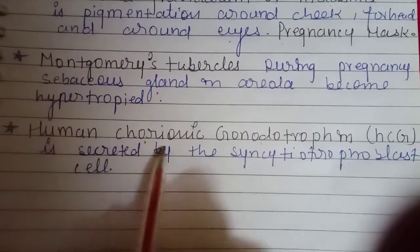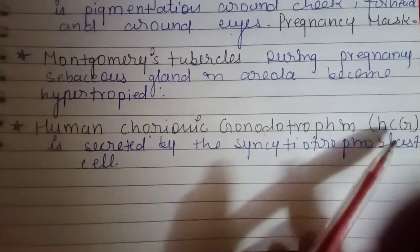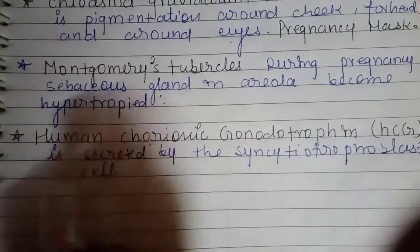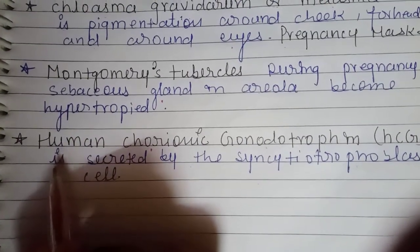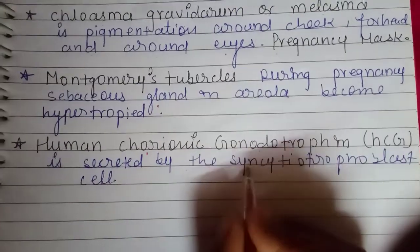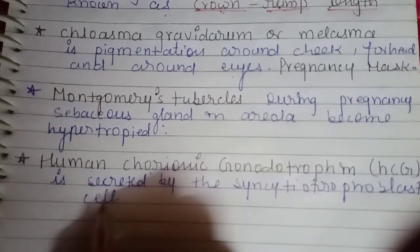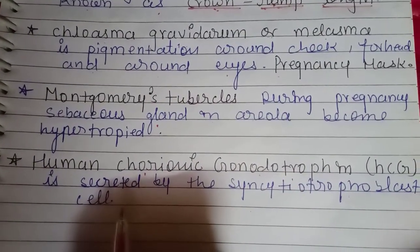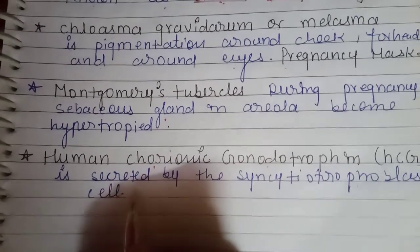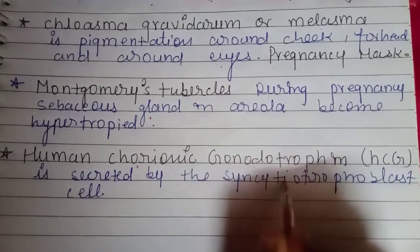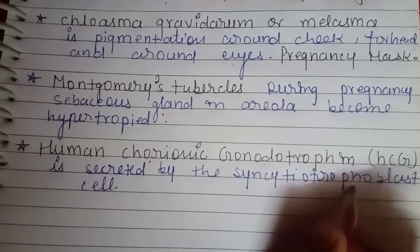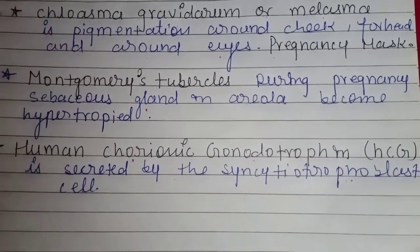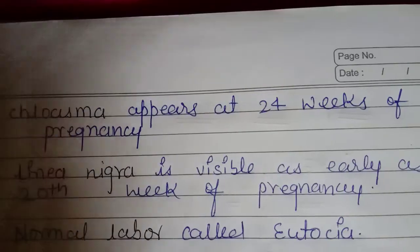Next is Human Chorionic Gonadotrophin, which we call HCG in short form. HCG is secreted by the syncytiotrophoblast cells. The trophoblast has two layers — an inner layer and an outer layer. The outer layer is called syncytiotrophoblast, and it releases HCG, which is necessary to maintain the pregnancy.